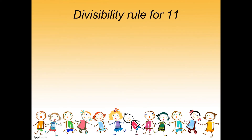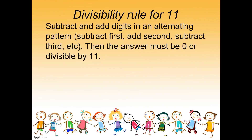Let's talk about the divisibility rule for 11: subtract and add digits in an alternating pattern — subtract first, add second, subtract third, and so on. Then the answer must be 0 or divisible by 11. So we alternate: minus, then plus, then minus, then plus, and so on, starting with minus.